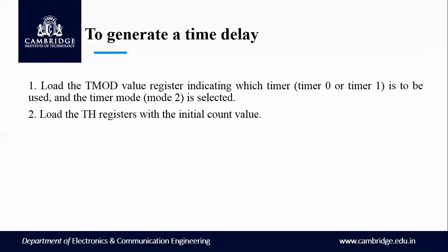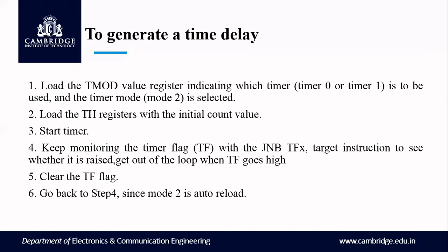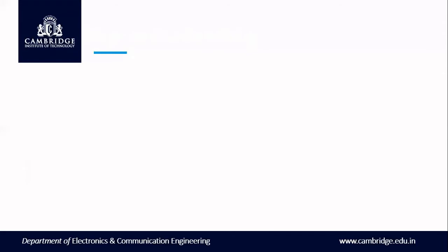Once TMOD is configured, the second step is to load the TH register with the initial count value. We need to calculate what initial value to load to get the desired delay. Once TH is loaded, start the timer, then keep monitoring the timer flag using JNB — jump if not bit — on the TF bit with a target label. Once TF is set, the instruction becomes false and execution exits the loop. After rollover, clear the timer flag and go back to step 4. Since mode 2 is auto reload, it will continue monitoring automatically.